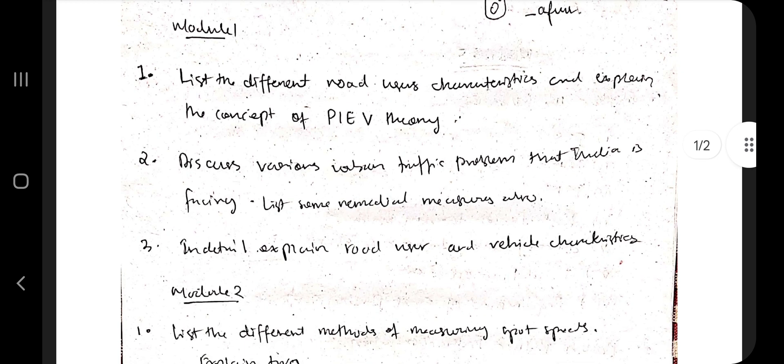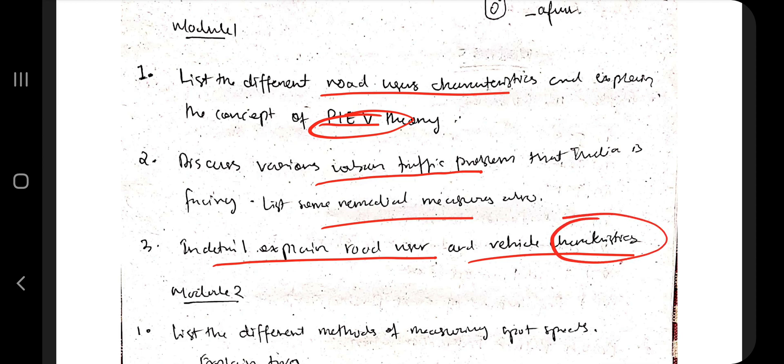The first question is from Module 1: PIE V theory. You need to know what are the characteristics of the road users and the theory regarding it. Next one is explain the various urban traffic problems that India is facing and the remedial measures also. Then finally you need to know about the road user and the vehicle characteristics. Road user is again repeated here, so as you can see it's a very important question.